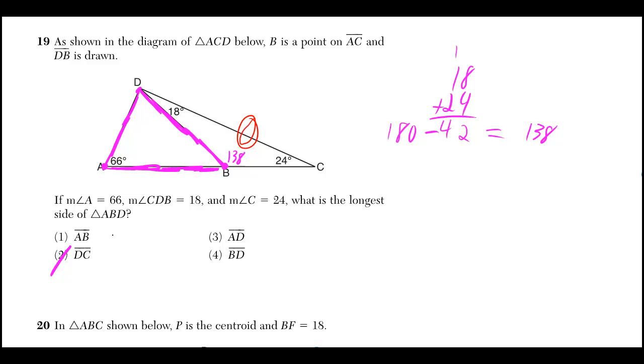Alright, so AB, AD, BD. Alright, I see you, I see you. Those are the only sides in triangle ABD. 180 minus 138, that must be the 42 we got.